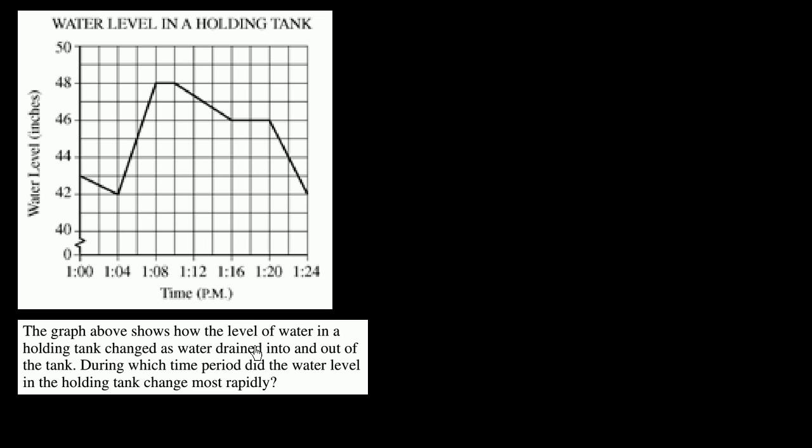The graph above shows how the level of water in a holding tank changed as water drained into and out of the tank. During which time period did the water level in the holding tank change most rapidly?